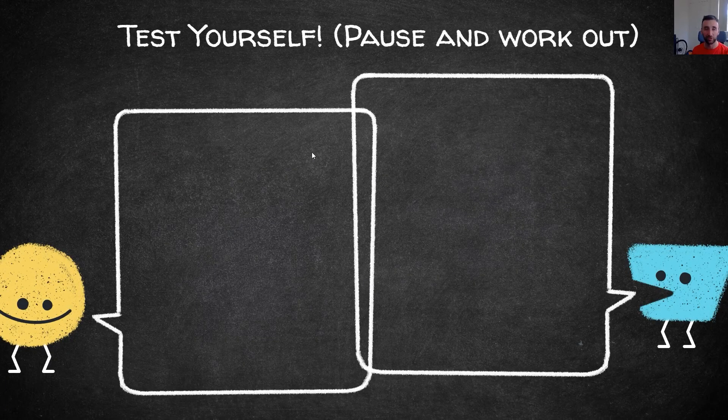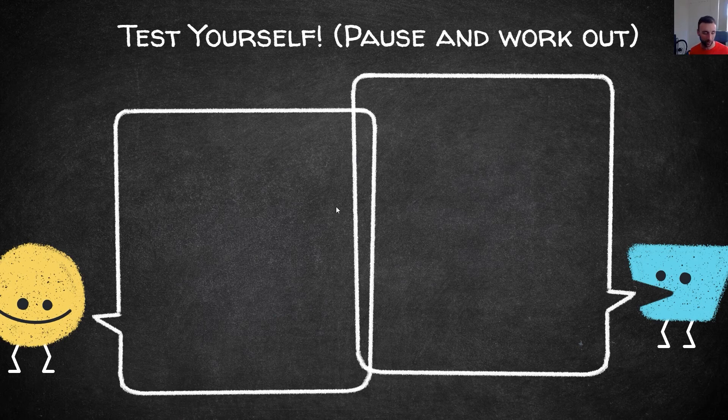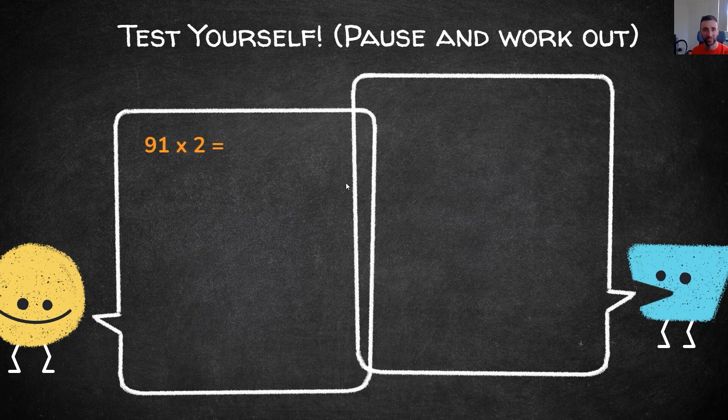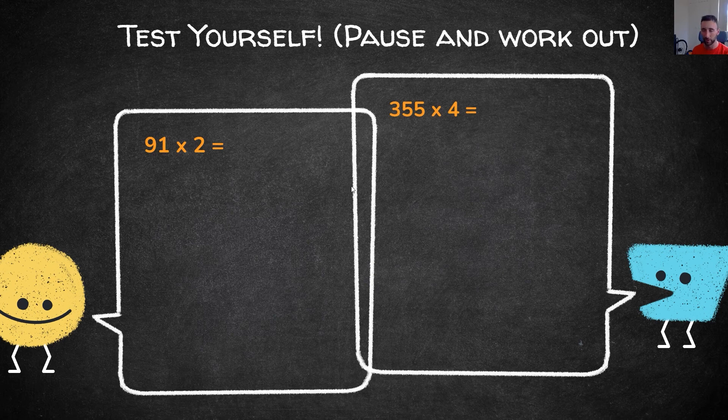Now I'd like you to work out two questions yourself at home, maybe on paper or a whiteboard. Pause the video after you've started and then we'll go through the answers together to see if you've grasped the partitioning method. Your two questions are 91 times 2 and 355 times 4. I'll give you a few minutes now, just pause the video and unpause when you're ready.